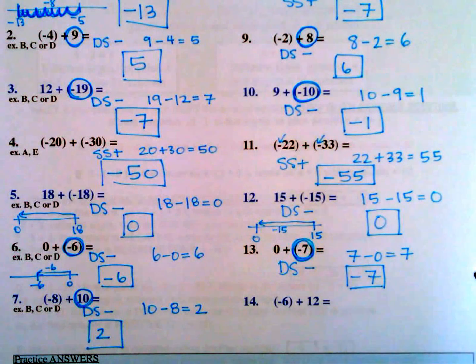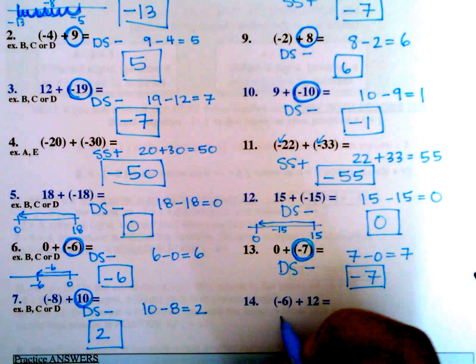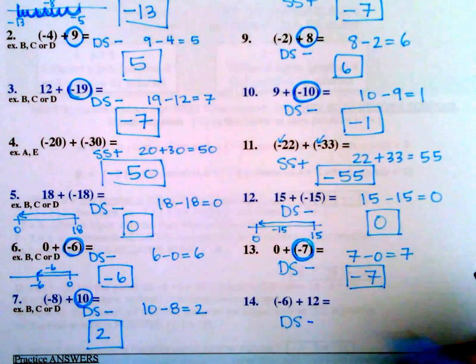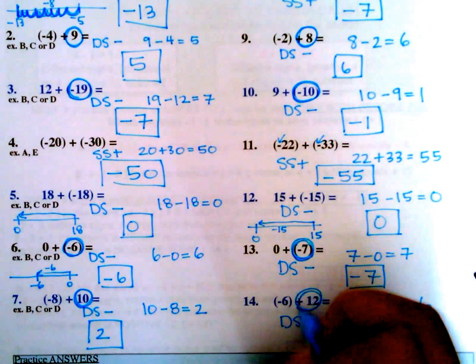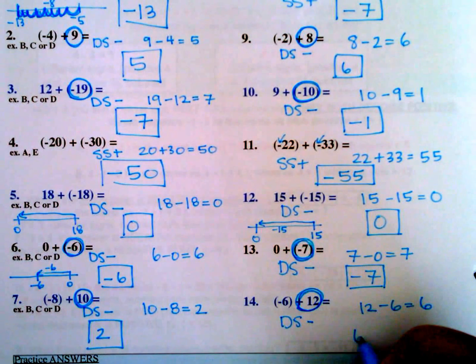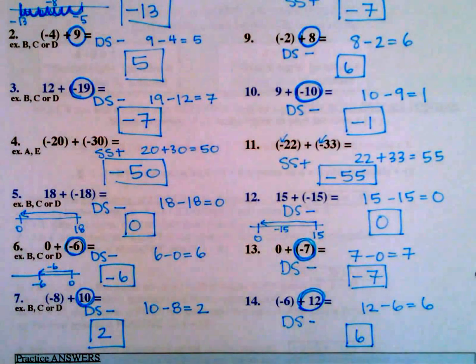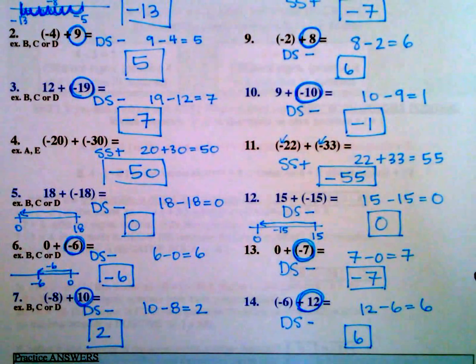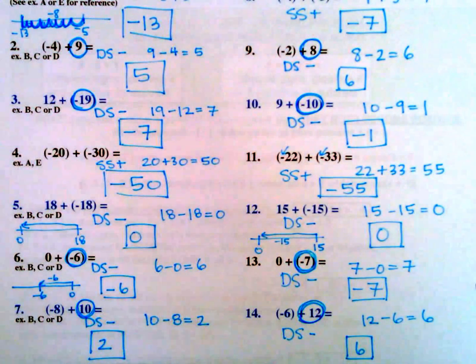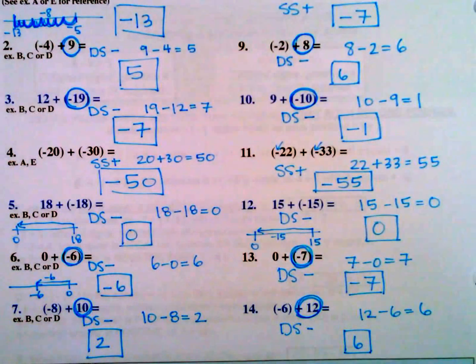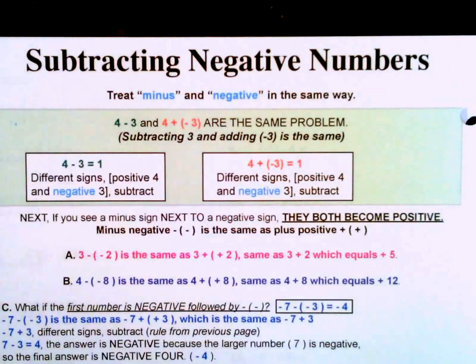Number 14: negative 6 plus 12. Different signs, subtract: 12 minus 6 equals 6. The larger number is positive, so the answer is positive 6. For those with the book, all answers are explained in detail below for extra help. We'll continue in the next video with subtracting negative numbers.